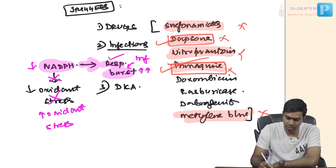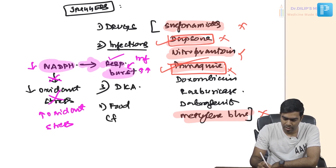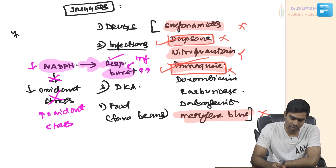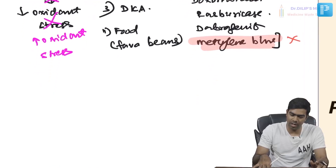Other triggers include diabetic ketoacidosis and certain foods — most notably fava beans. This is why G6PD-related hemolysis was historically referred to as favism. Fava beans can trigger hemolytic anemia in G6PD-deficient individuals.